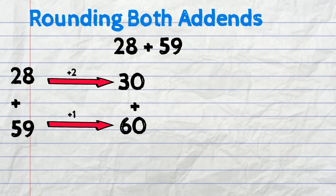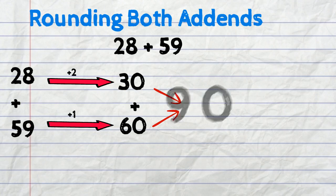So the new numbers that we have after rounding are 30 plus 60 which are easier to solve. So 30 plus 60 equals 90.